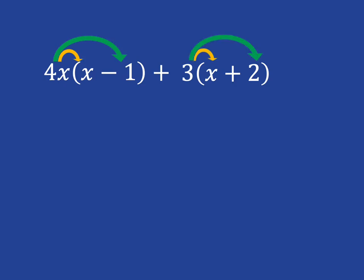Let's go ahead and do it. 4x times x is 4x squared. 4x times minus 1 is minus 4x. Plus 3 times x is plus 3x, and plus 3 times plus 2 is plus 6.